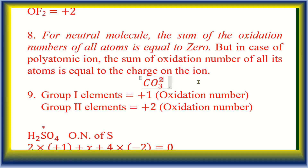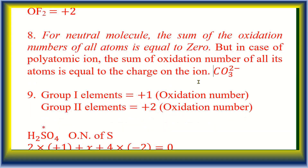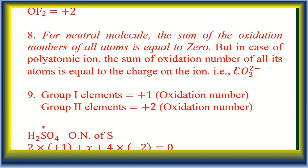Rule 8: For a neutral molecule, the sum of the oxidation numbers of all atoms is equal to zero. In the case of a polyatomic ion, the sum of the oxidation numbers of all its atoms is equal to the charge on the ion. For example, in CO₃²⁻, the total charge is −2. Group 1 elements are always +1 and Group 2 elements are always +2.